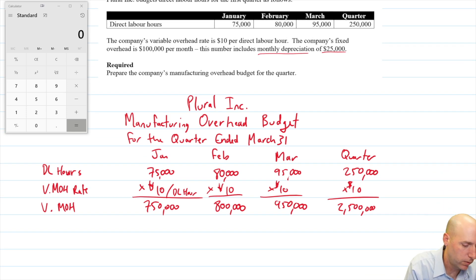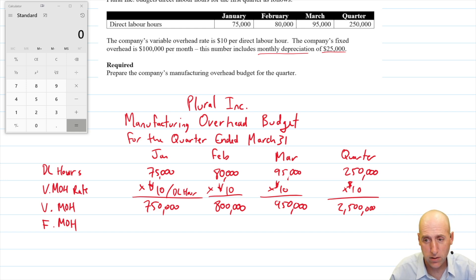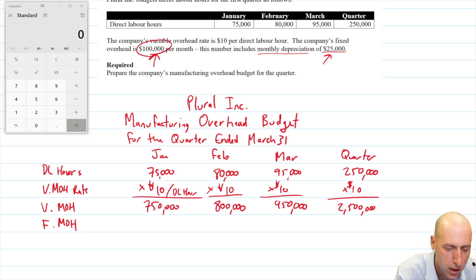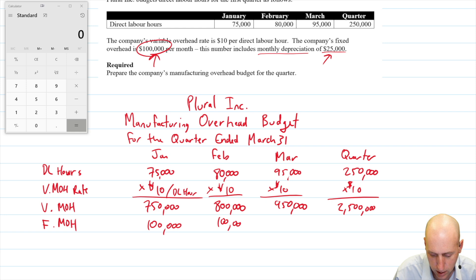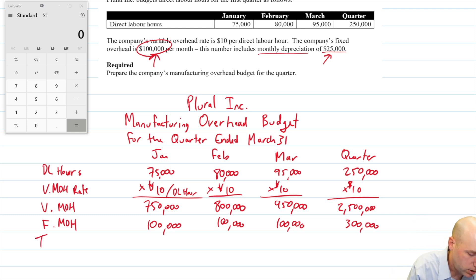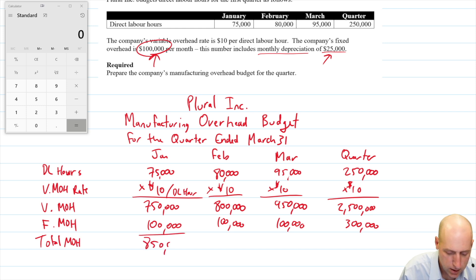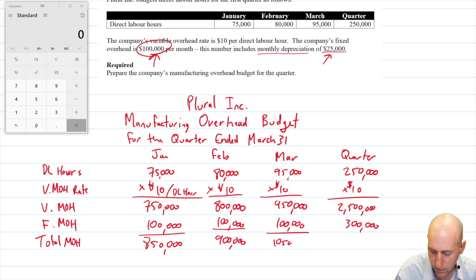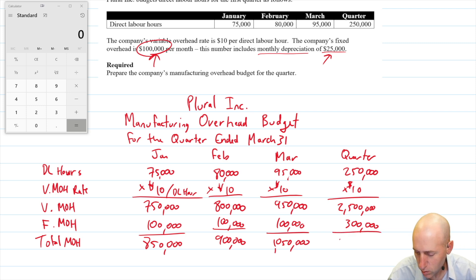Our fixed overhead is $100,000 per month — I was getting confused with the depreciation number, but fixed overhead is $100,000 a month. So it's $100,000 for January, $100,000 for February, $100,000 for March — that's what makes it fixed, it's unchanging — for a total of $300,000. Our total overhead is just variable plus fixed: $850,000, $900,000, $1,050,000, and $2,800,000 for the quarter.